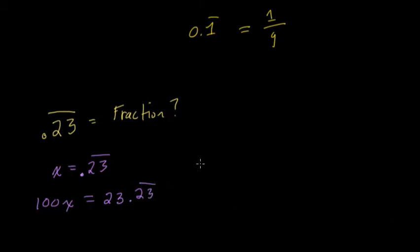And now our proof would just show almost the exact same structure. We have 100x minus x equals the same thing over here in number form, 23.23 repeating, minus 0.23 repeating.